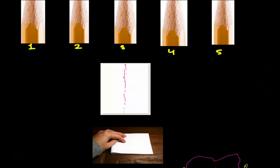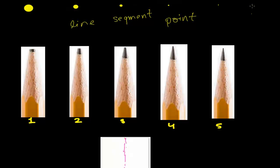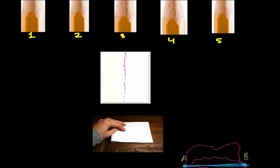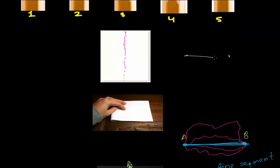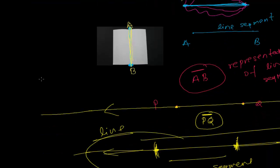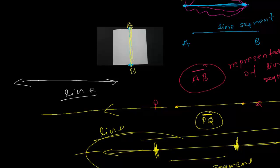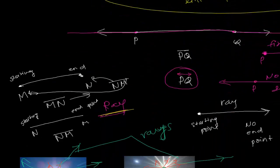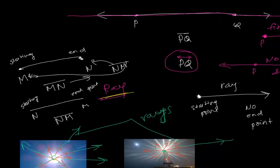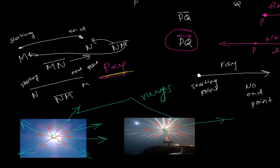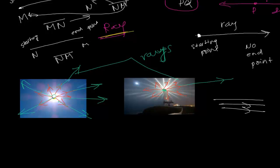So let's summarize what we learned. A point is an invisible dot-like structure. A line segment is the shortest distance between two points. A line is just like a line segment but it does not have end points — it keeps moving on and never ends. A ray has a starting point but no end point — it starts from somewhere and keeps going. And a group of rays is called a beam.